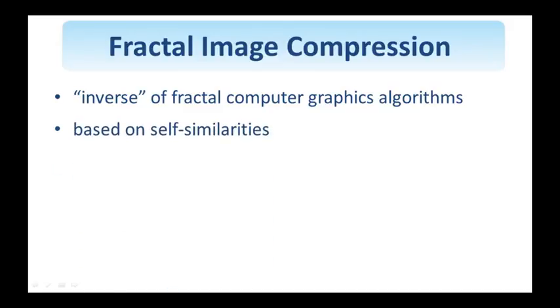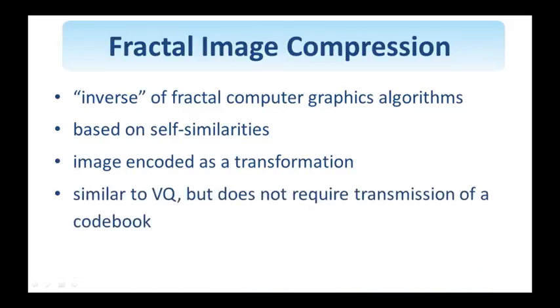The basic idea is that there are self-similarities inside the image that, if exploited appropriately, and these similarities will be expressed through transformations, as we will see, these transformations will represent the encoded image. Fractal image compression relates to vector quantization, but unlike VQ, where a codebook needs to be transmitted to the decoder, with fractal encoding, this codebook is a virtual one. This is the advantage of fractal over VQ.